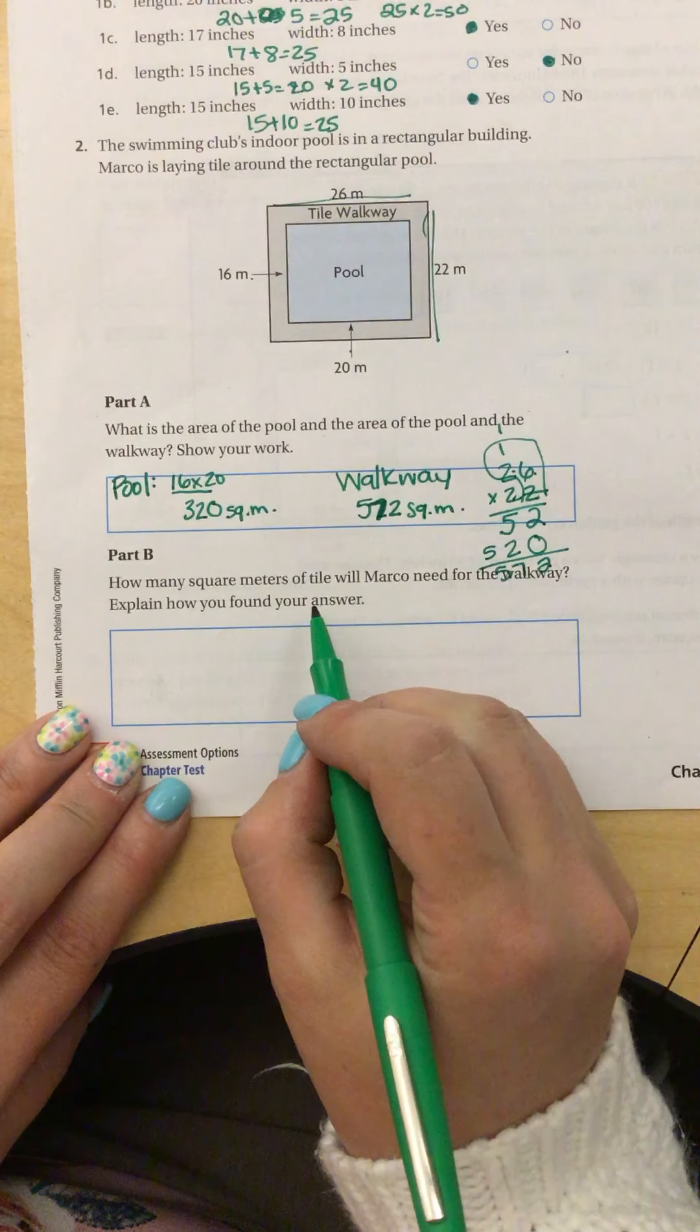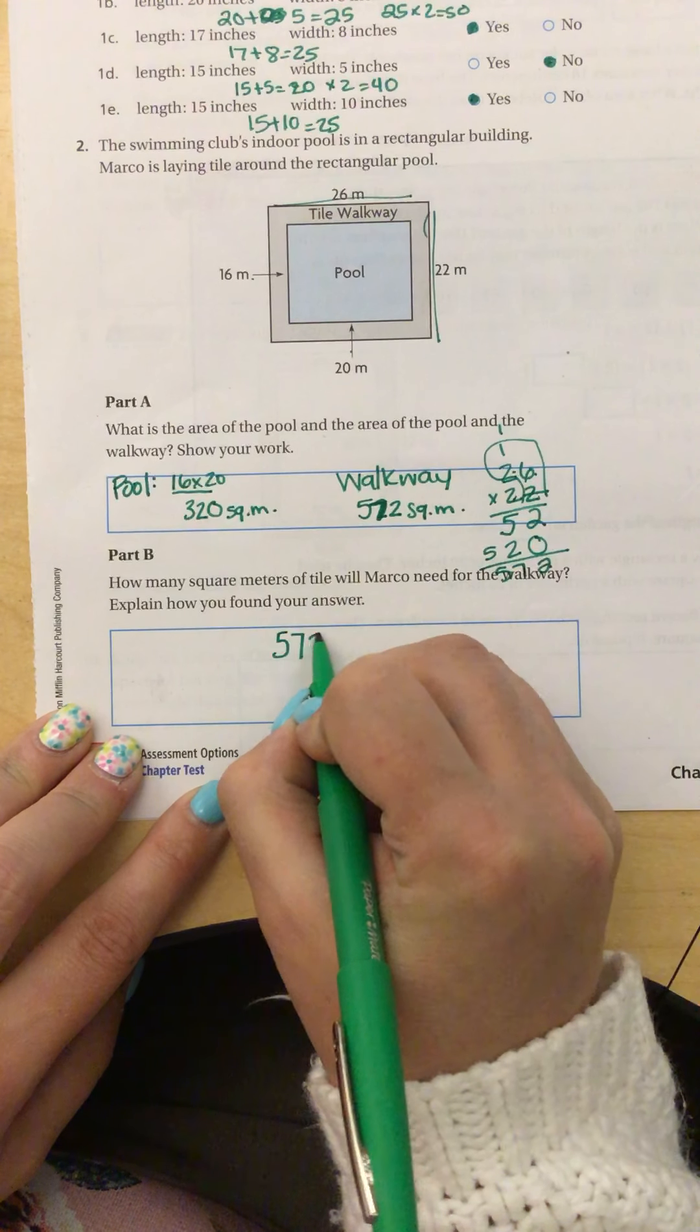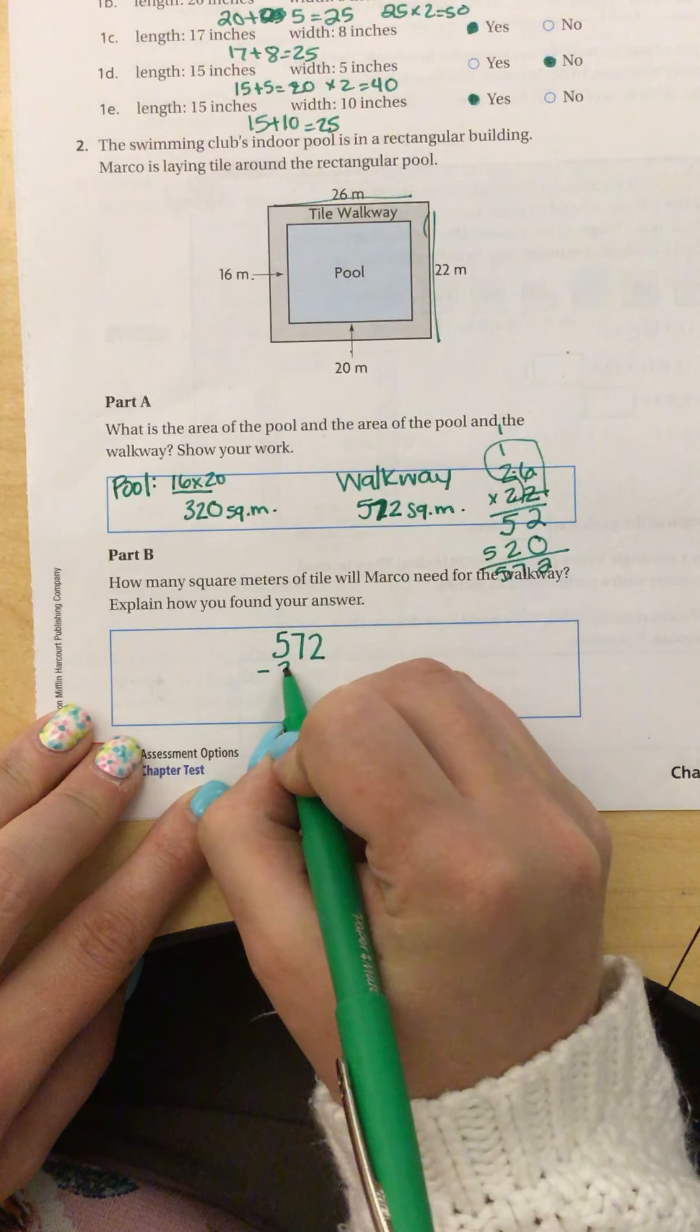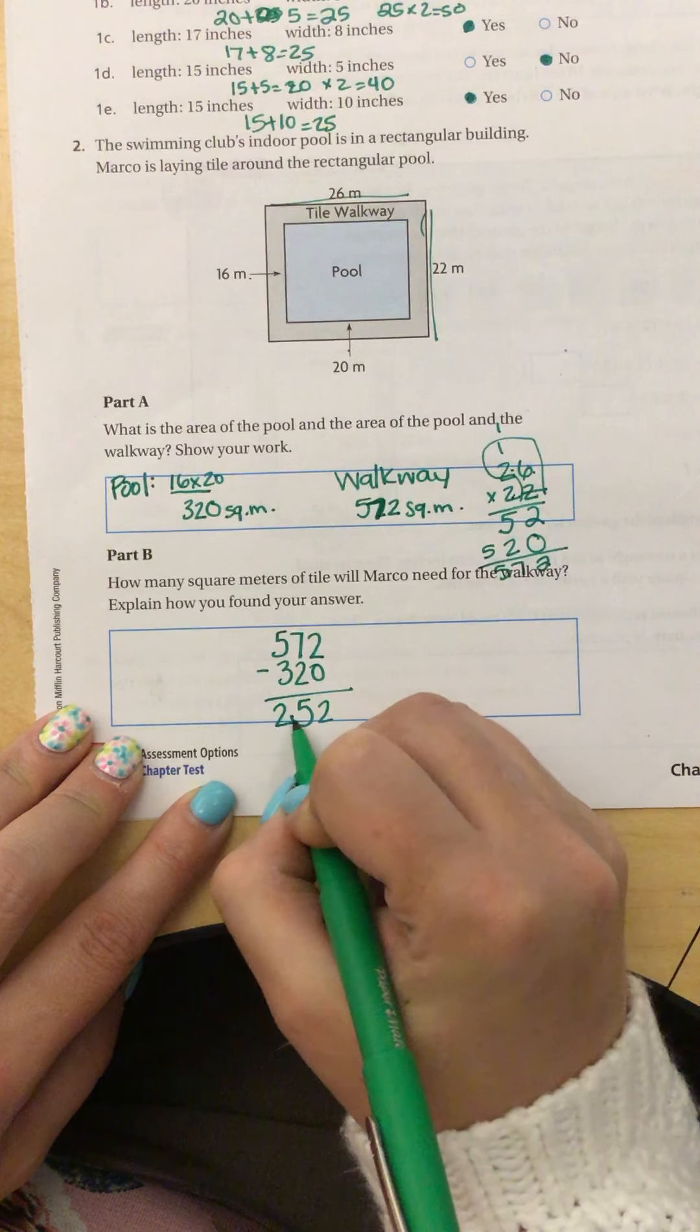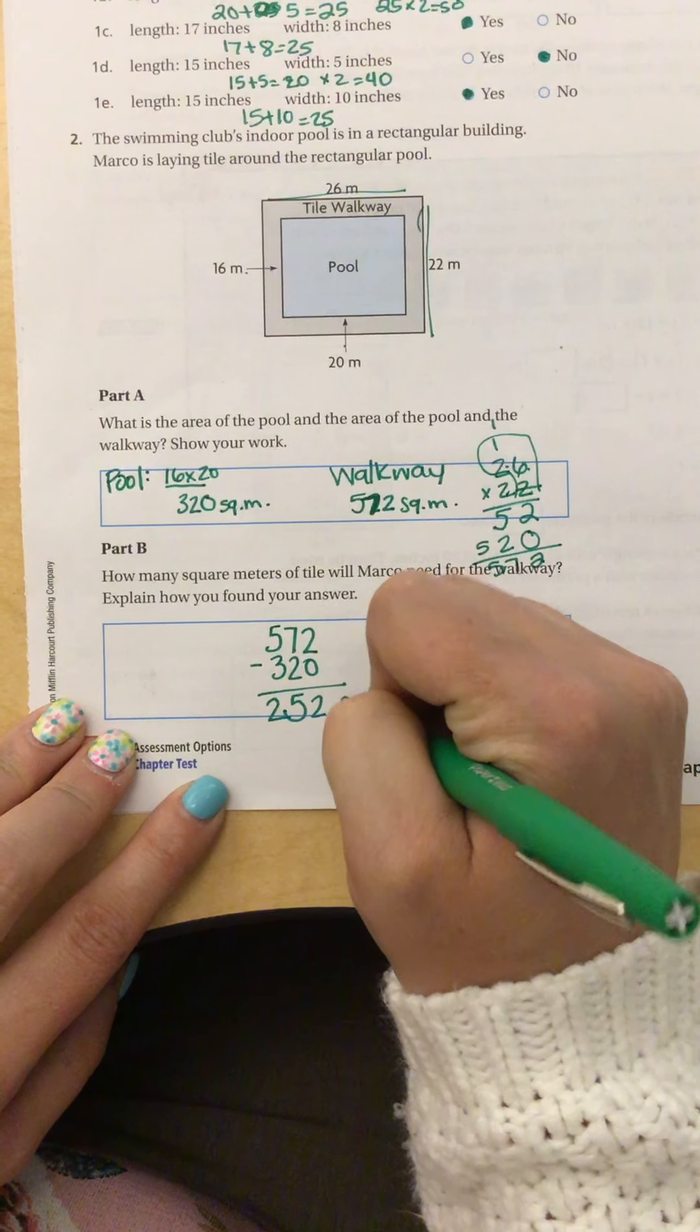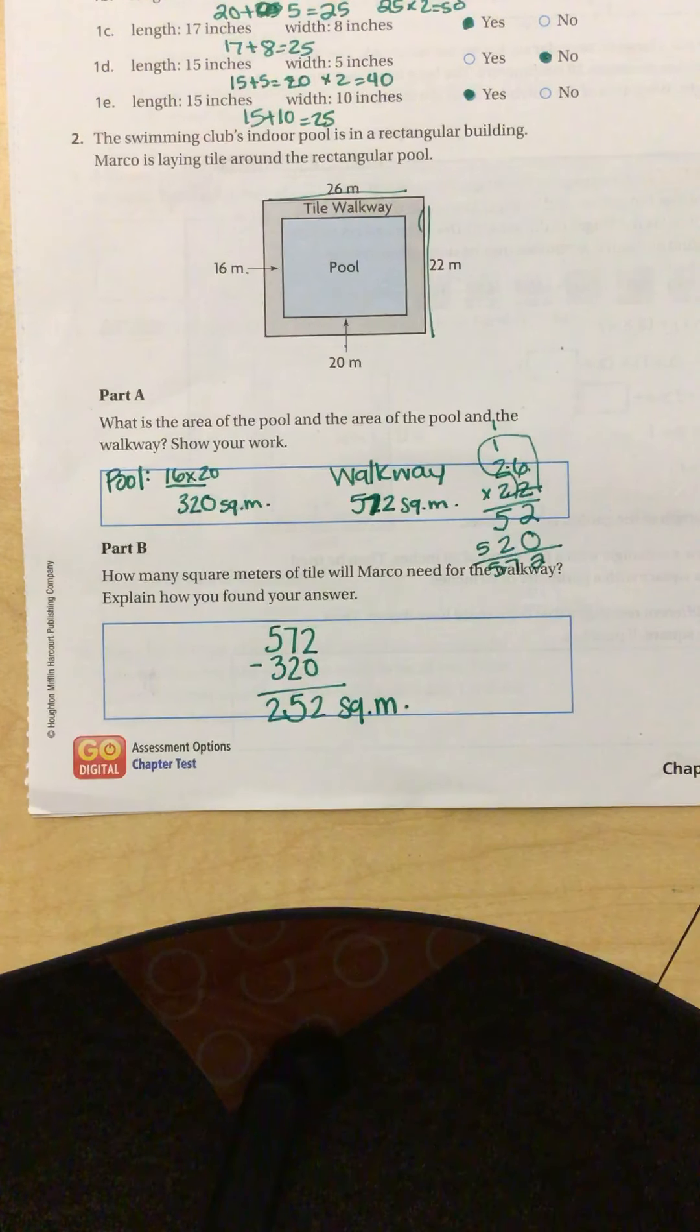Now, how many square meters of tile will Marco need for the walkway? Well, just for the walkway alone, I'm going to do 572 minus 320, and that gives me 252 square meters. So make sure when you are doing this that you do every little part. If you do it step by step, then you won't be able to do this without making simple mistakes.